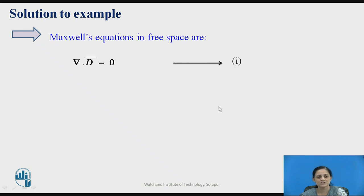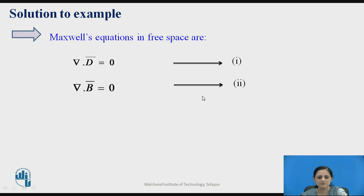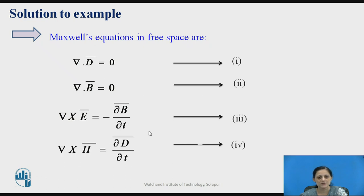For free space, we define four Maxwell equations: (1) ∇·D̄ = 0, (2) ∇·B̄ = 0, (3) ∇×Ē = −∂B̄/∂t, and (4) ∇×H̄ = ∂D̄/∂t. Given the pair Ē and H̄, we substitute into each equation.